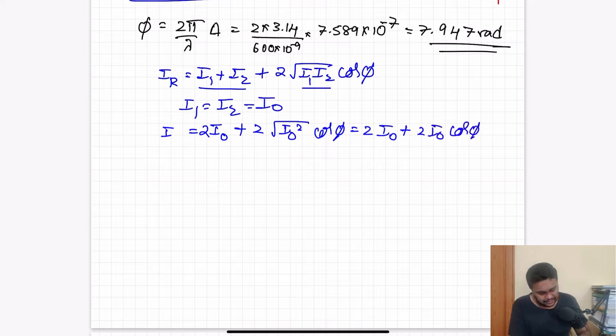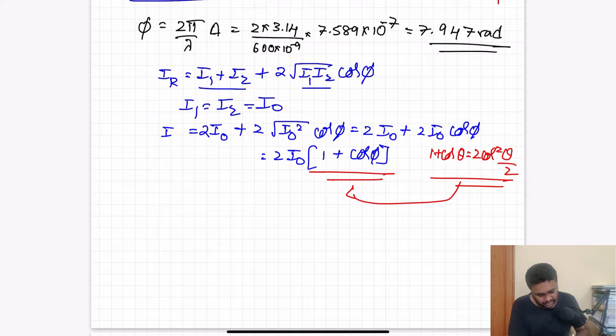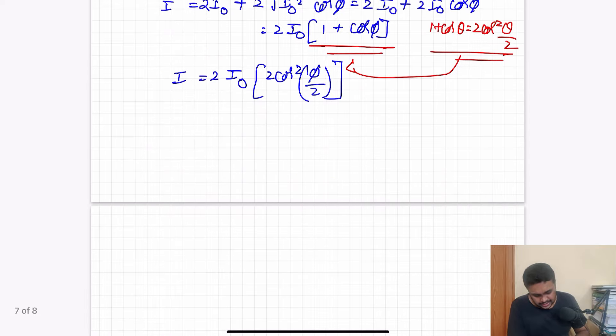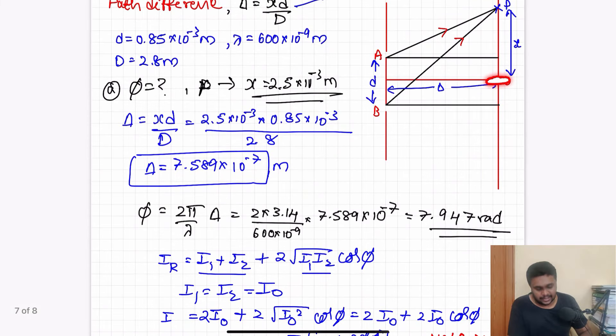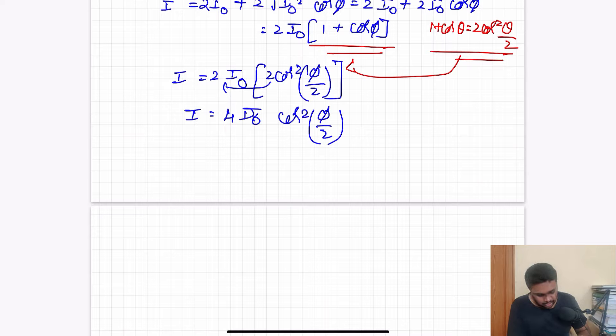Two i naught common taken out. This becomes two i naught into two cos square phi by two. This is i. So this becomes four times i naught cos square phi by two. Four i naught is usually the maximum intensity that we see at the center, so i can replace this as i max. So i is equal to i max cos square phi by two.